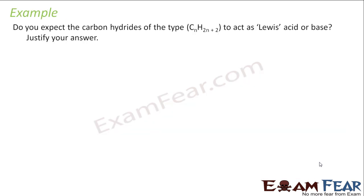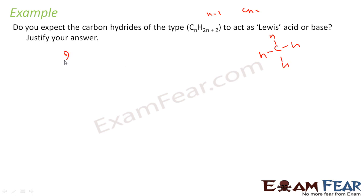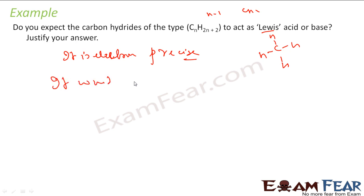Let's take some examples. Do you expect carbon hydrides of the form CₙH₂ₙ₊₂? If you put n=1 you get CH₄. If you see CH₄, it is electron precise — not electron deficient, not electron excess. The question is, do we expect carbon hydrides of this form to act as Lewis acid or base? Since it is electron precise, it won't act as an acid or base.